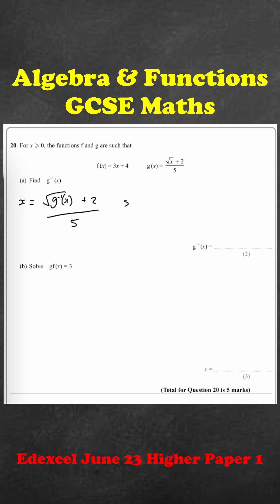Multiply both sides by 5 to get 5x. Take off the 2 from both sides, so 5x minus 2 equals the square root of g⁻¹(x).